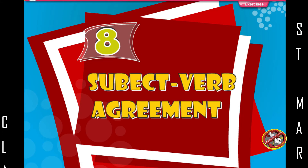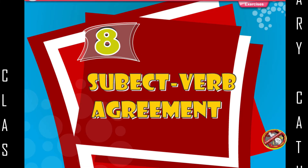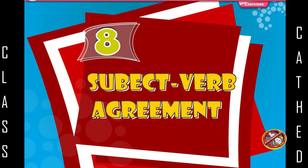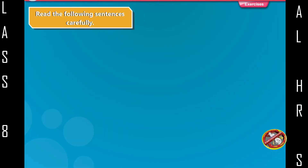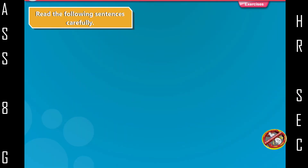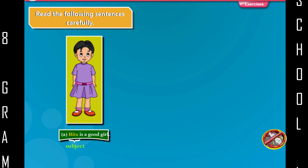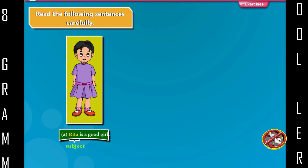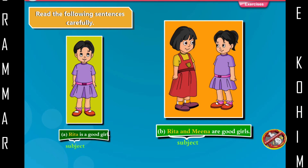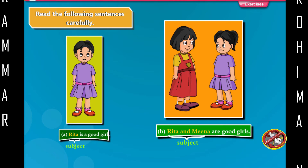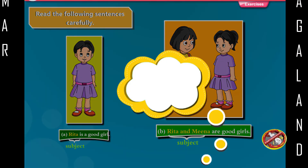Chapter 8: Subject-Verb Agreement. Read the following sentences carefully. Sentence A: Rita is a good girl. Rita — subject. Sentence B: Rita and Mina are good girls. Rita and Mina — subject.